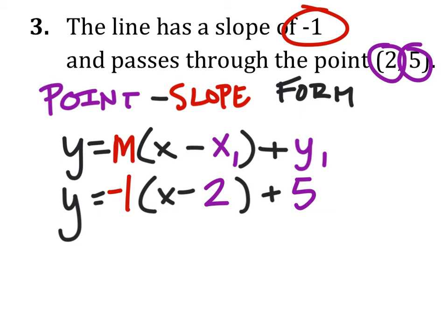In order to simplify it in the slope-intercept form, I'll multiply or distribute this negative 1 into the parentheses, giving us a negative 1x plus 2, and nothing else changes. So this is what we have now.